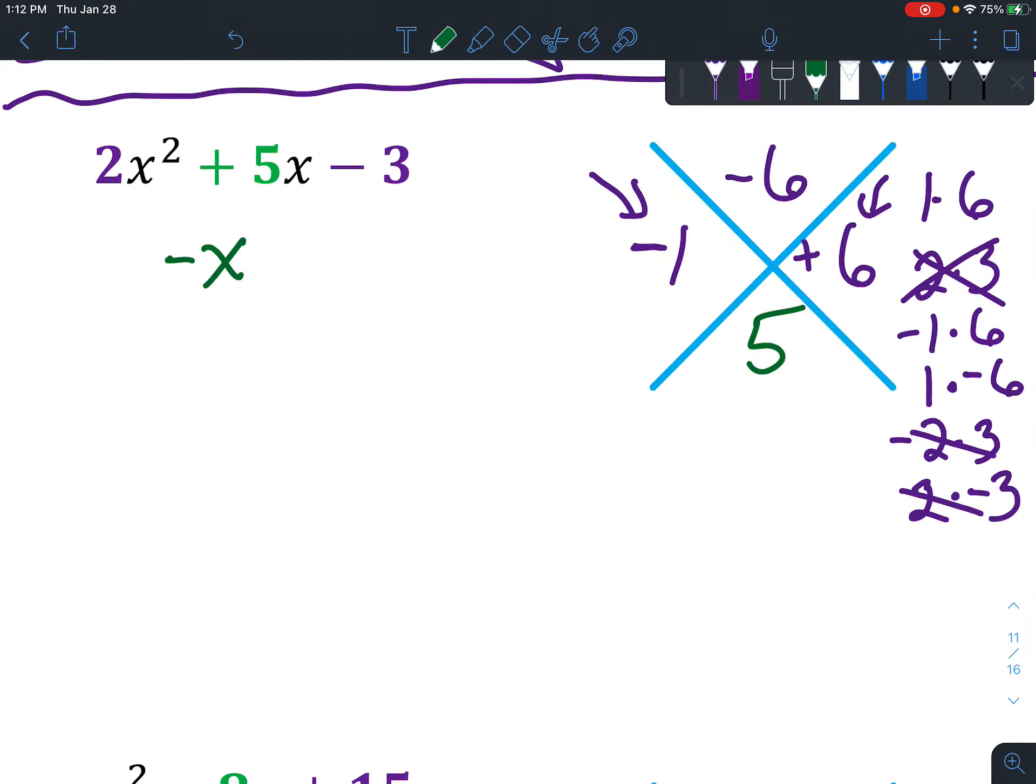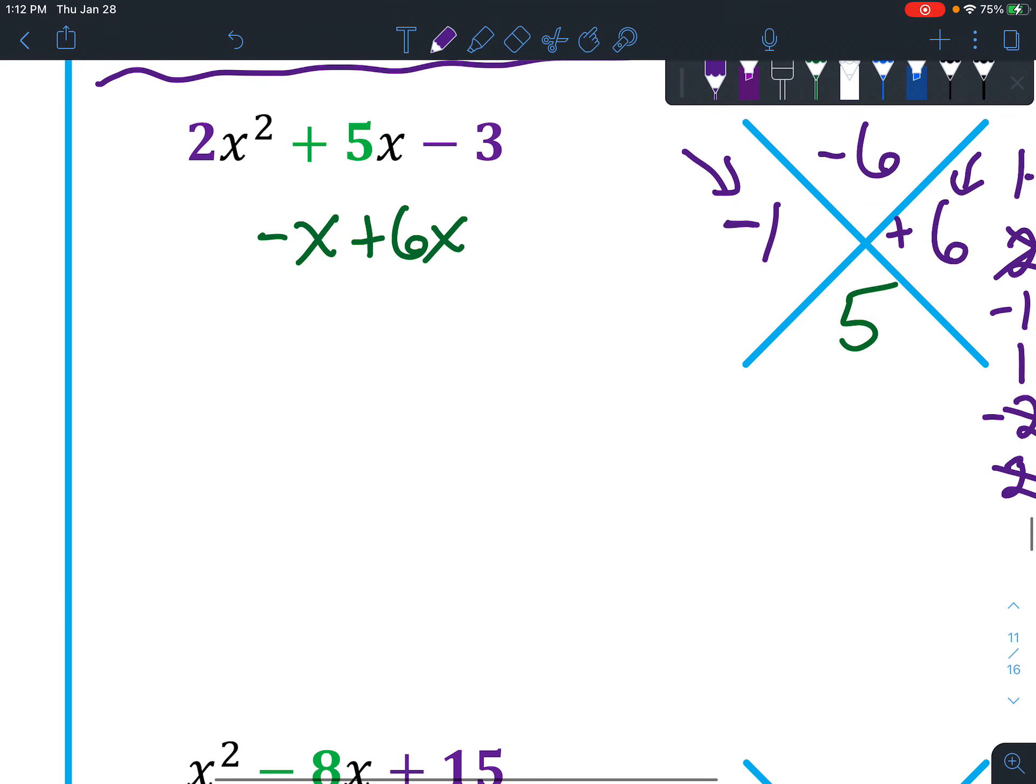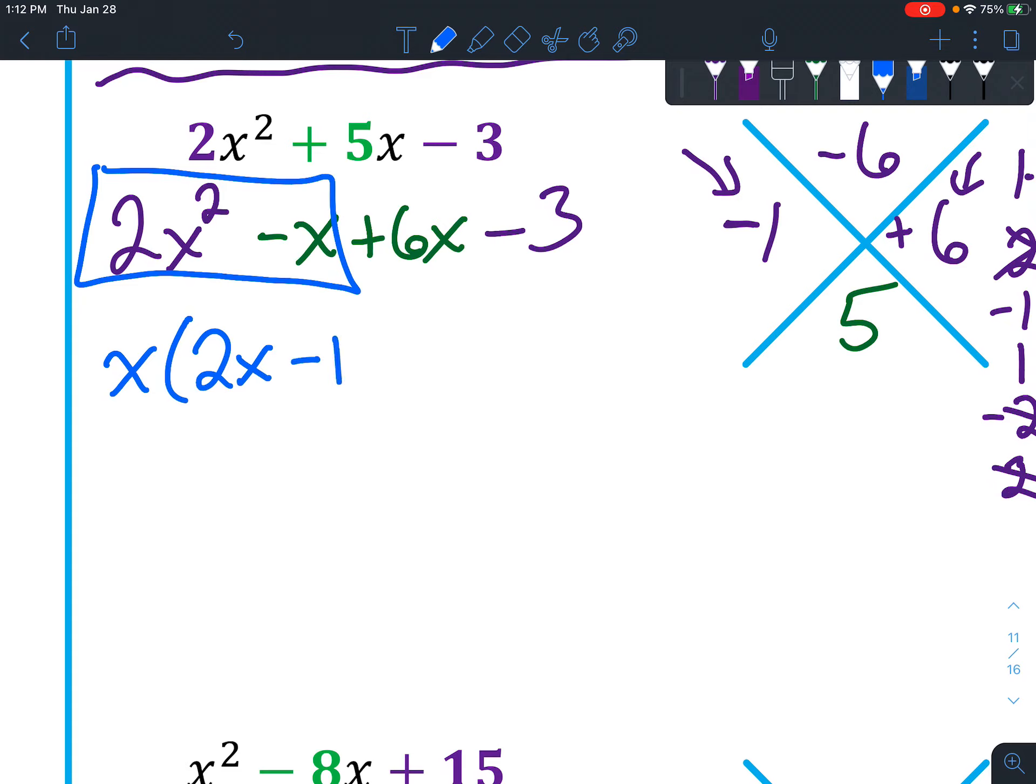So instead of a 5x, you're going to put negative x plus 6x. And then just recopy the front and the back: 2x squared minus 3. Now you're going to look at 2x squared minus x. And the only thing they have in common is the x. So we're going to have 2x times... 2x times 2x is 2x squared, and x times negative 1 equals negative x.